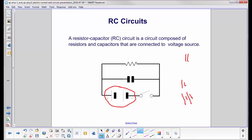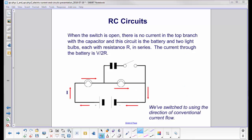We have a circuit with a battery, a light bulb, then a junction where we come up to a capacitor. We have a switch and another light bulb here. Notice how we switch to using the direction of conventional current flow, coming out of the positive terminal this way.